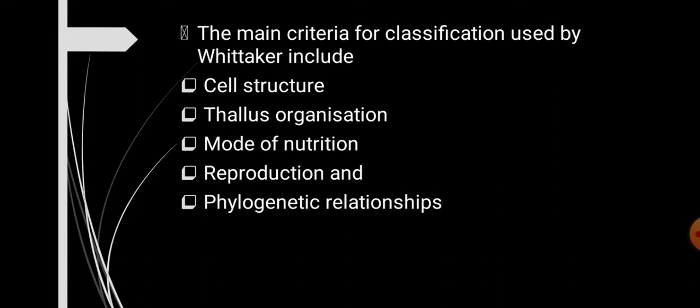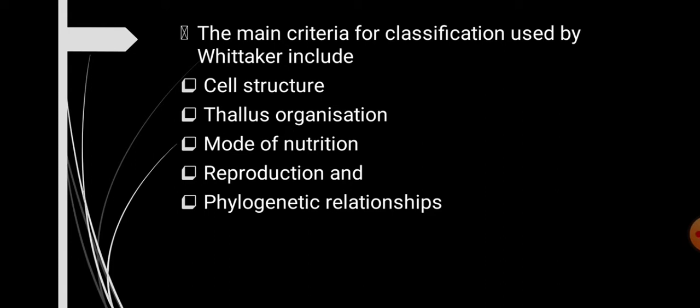The criteria used for classification in this system include: cell structure — whether organisms are prokaryotes or eukaryotes; whether they have a cell wall or lack one; thallus organization — whether they are unicellular or multicellular; tissue differentiation, organ differentiation, or organ-system level of organization; mode of nutrition — whether autotrophic or heterotrophic; reproduction types; and phylogenetic relationships, which consider how organisms have evolved from primitive to highly evolved forms.